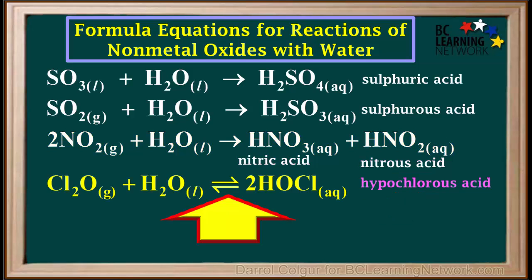An oxide of the non-metal chlorine, dichlorine monoxide, Cl2O, reacts with water to produce the weak acid HOCl, hypochlorous acid. This is an equilibrium reaction. Oxides of the other halogens have similar reactions with water.